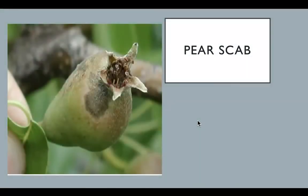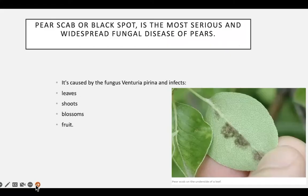Pear scab is a little bit different than apple scab — it is a different species. The interesting part is that pear scab can't transfer to apples, and apple scab can't go to pears. A big difference is that pear scab goes more quickly to the shoots than to the leaves, and pear scab is always found on the underside of leaves, while apple scab is on the top side.